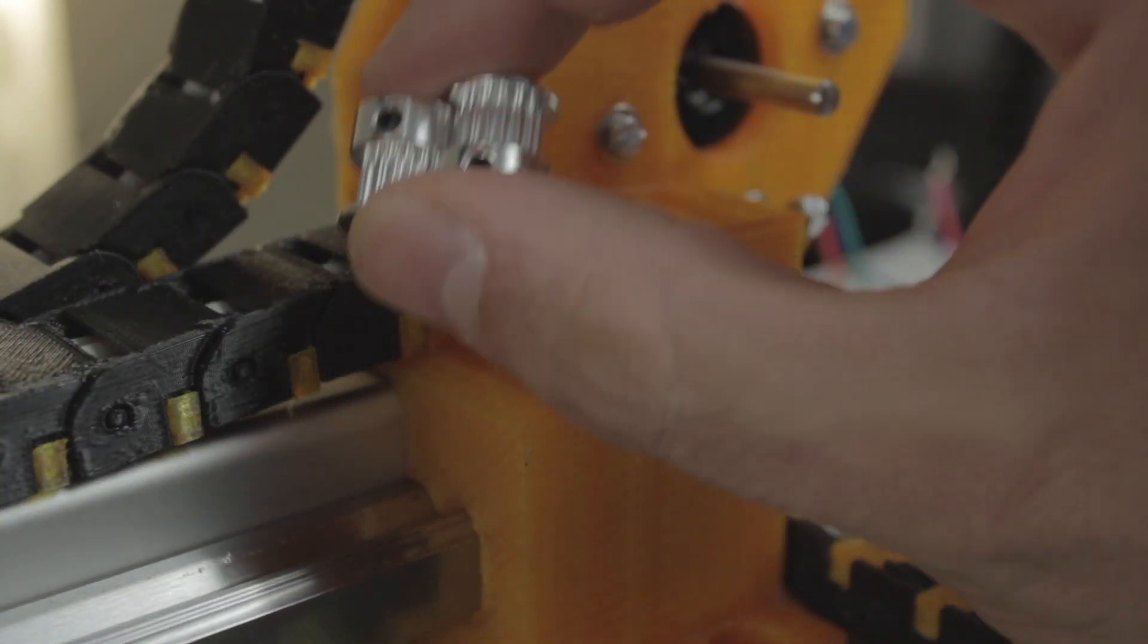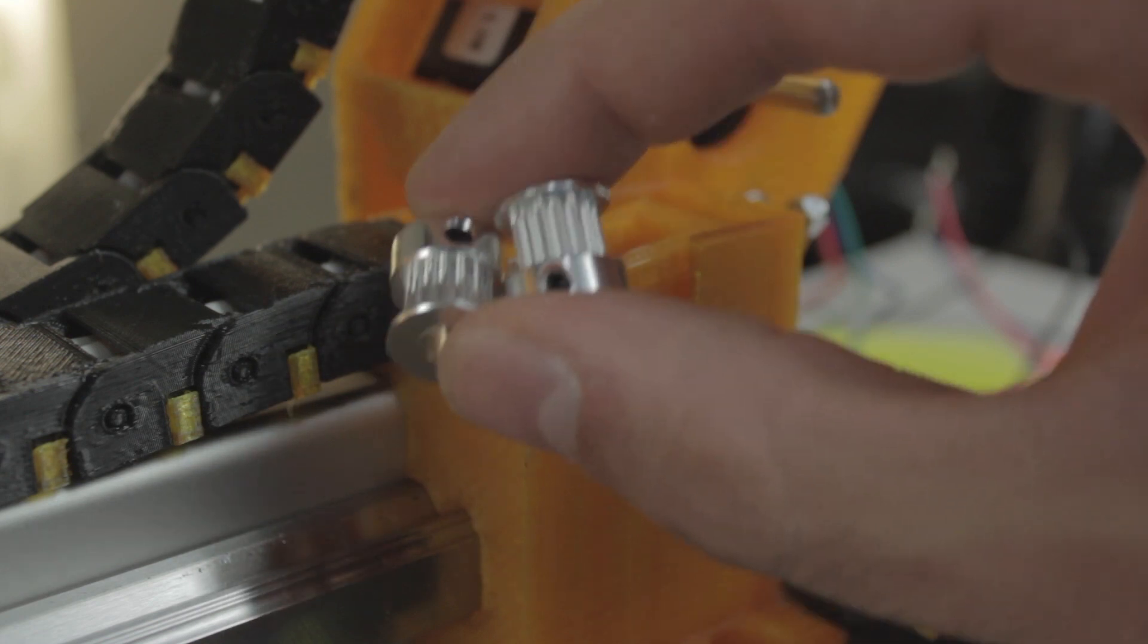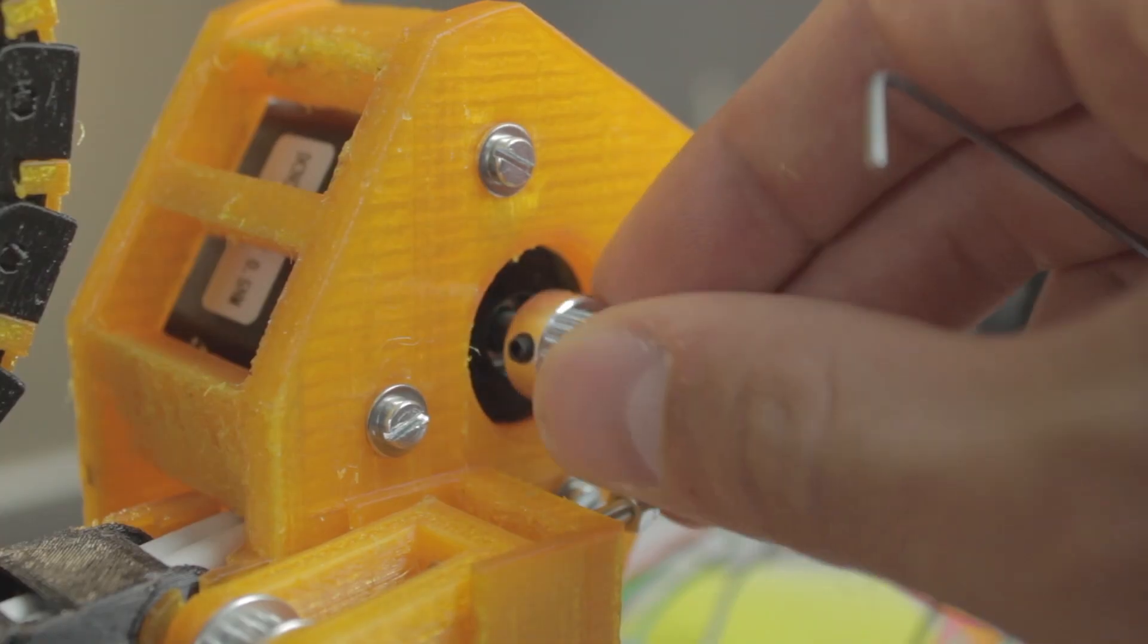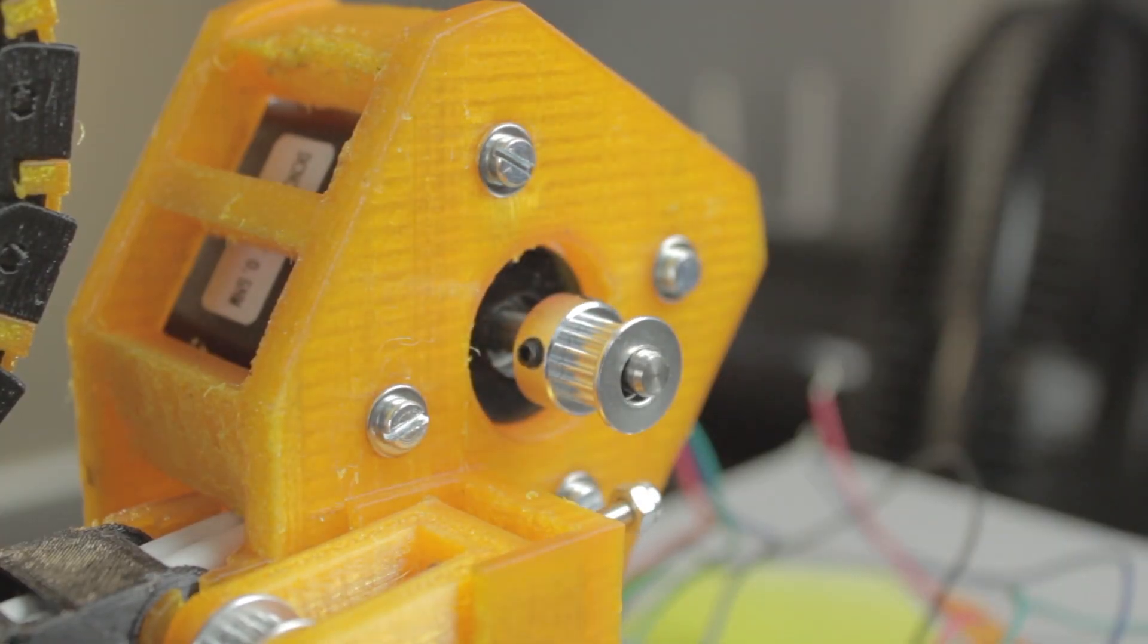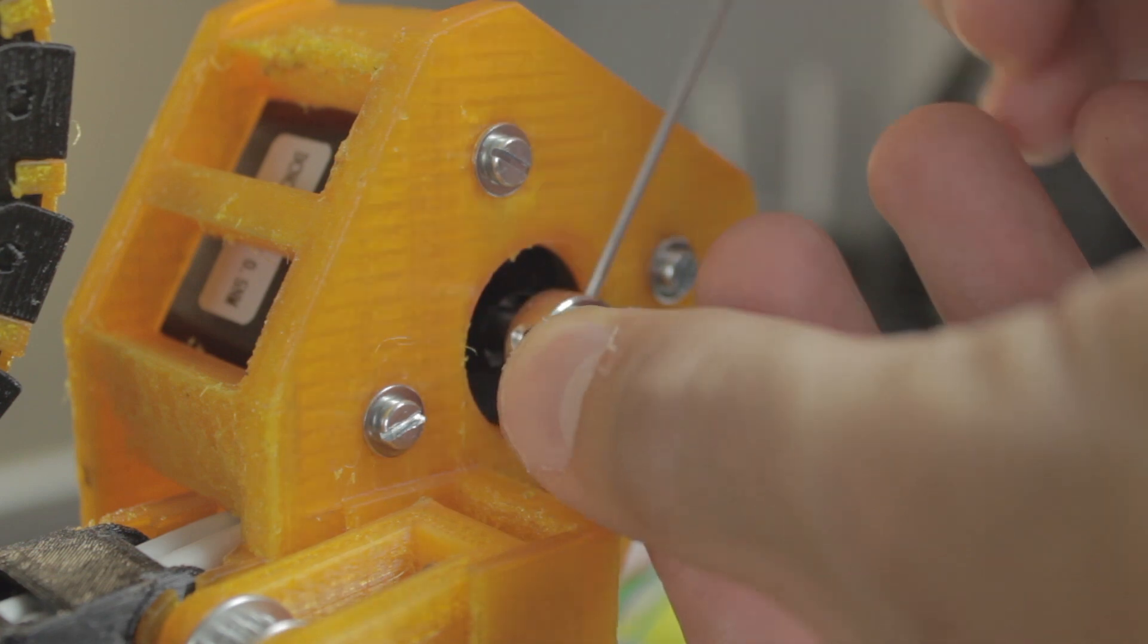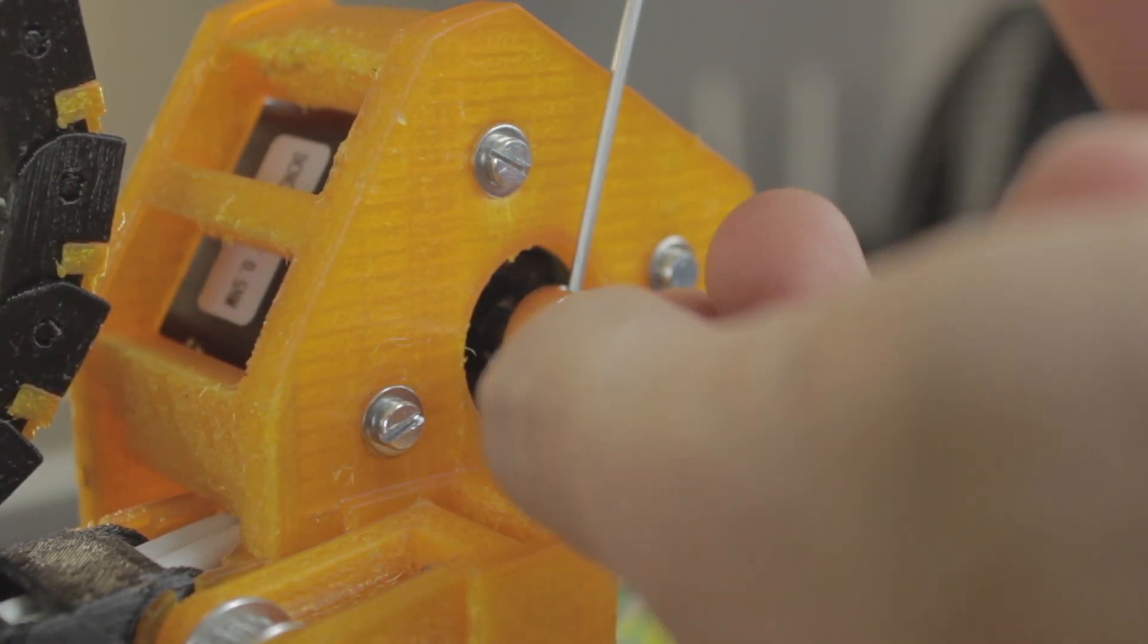To finish, one of the last steps will be to install the GT2 pulleys on the NEMA 17 stepper motors and tighten the two little screws that will hold them in place. So we'll insert it and we'll tighten first one all the way through, and then the second one till it's perfectly fixed in place.